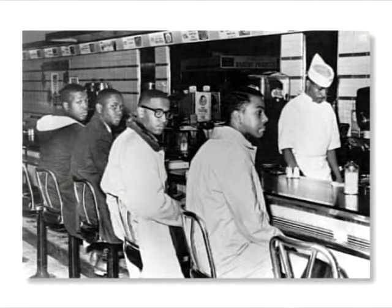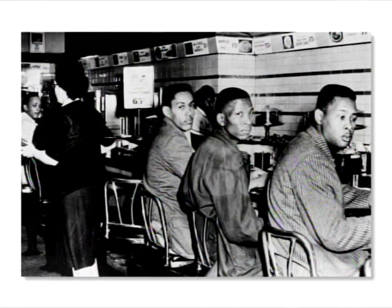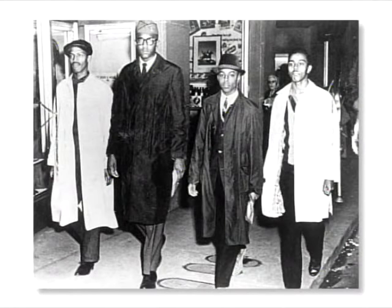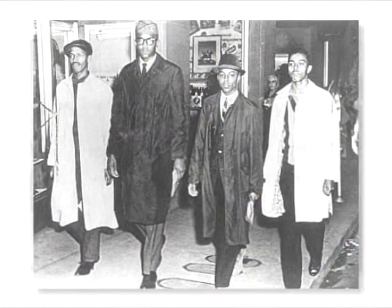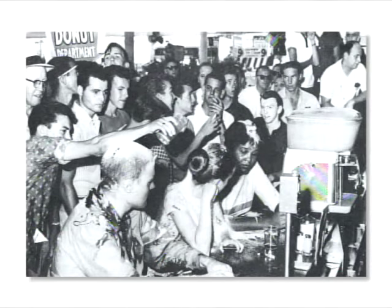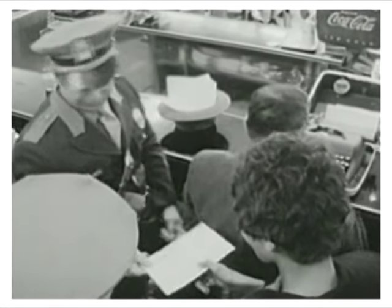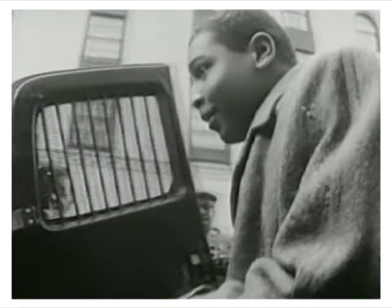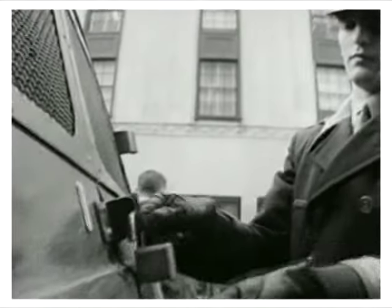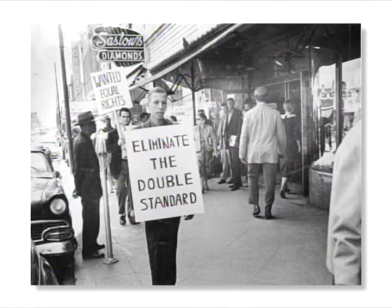Four black college students entered a variety store in Greensboro, North Carolina in February of 1960. Even though the lunch counter was for whites only, they sat down and politely asked to be served. They weren't, and remained seated until the store closed. The next day, 31 blacks were seated at the lunch counter. None were served. The third day, more than 60 black students took part in what was now being called a sit-in. Soon, lunch counters all over the South became the site of sit-ins. When a group of protesters was arrested, another group would be ready to take their place. White business owners could hardly afford the negative publicity and loss of income, so they reluctantly began to serve anyone, black or white.